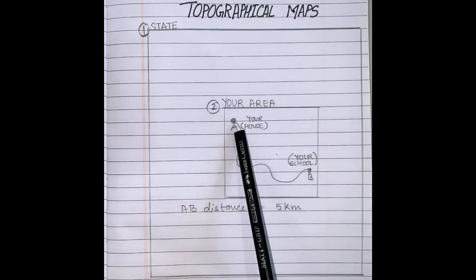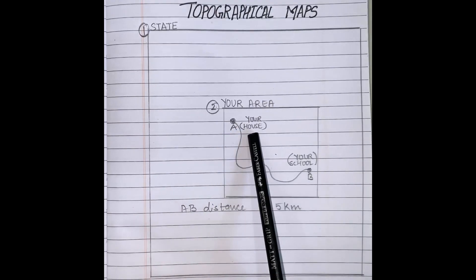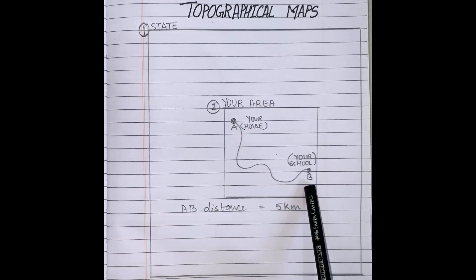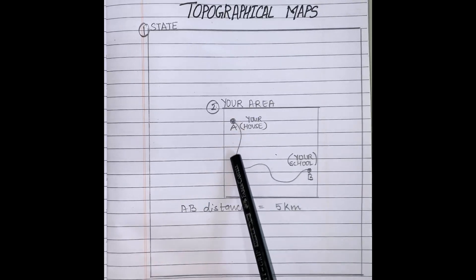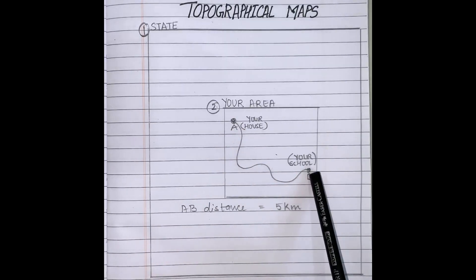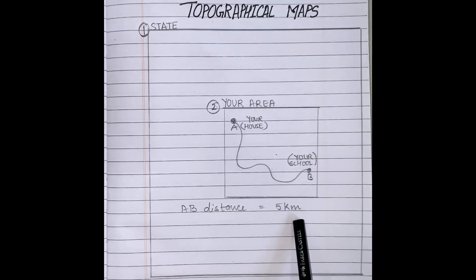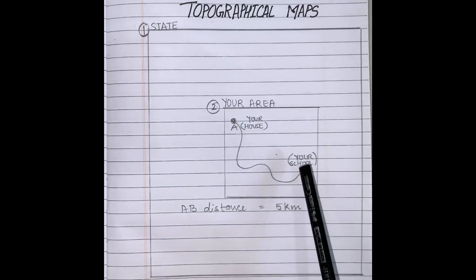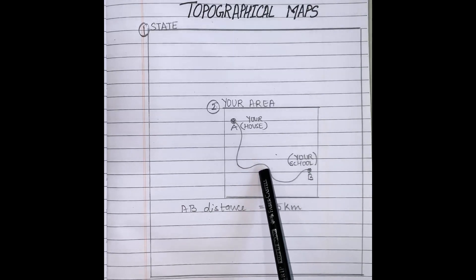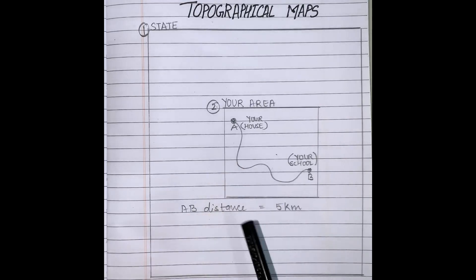In this I have shown point A, that is your house. Point B, that is your school. Every day you are taking this route to reach your school. Maybe the distance of AB is 5 km. Now within this 5 km, you want to know how many post offices, police stations, malls, places of worship, etc. are there. In that way, you need to see the topographical map.